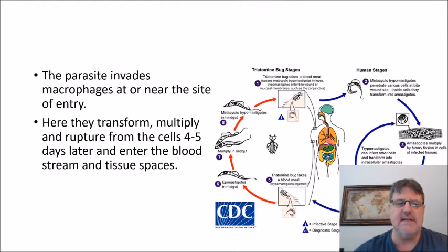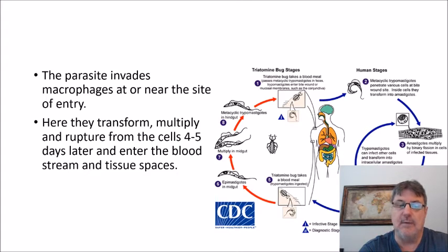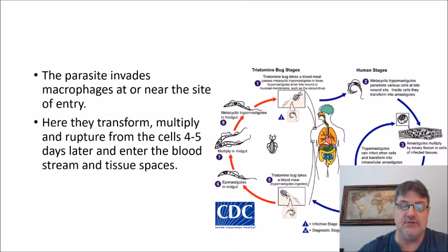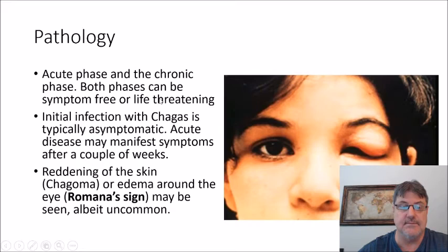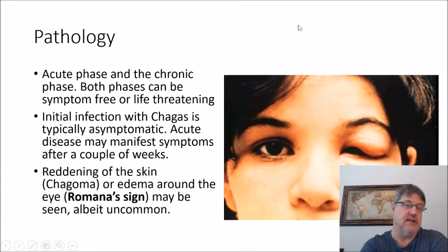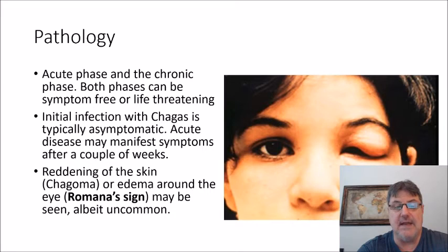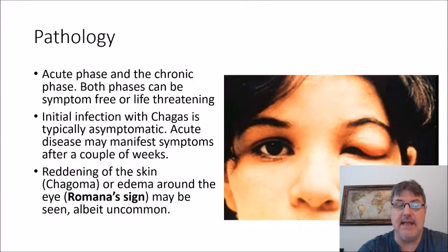The parasite invades the macrophages at or near the site of entry. There they transform, multiply, and rupture from the cells four to five days later, entering the bloodstream and tissue spaces. The pathology of Chagas disease has an acute stage and a chronic stage, and both can be symptom-free or life-threatening. The initial infection with Chagas is typically asymptomatic.